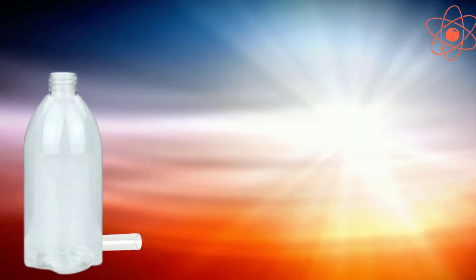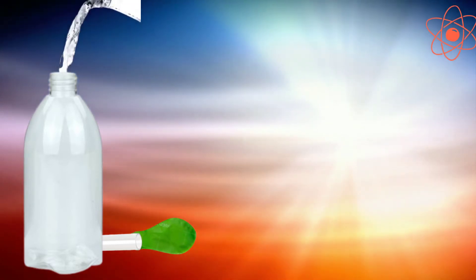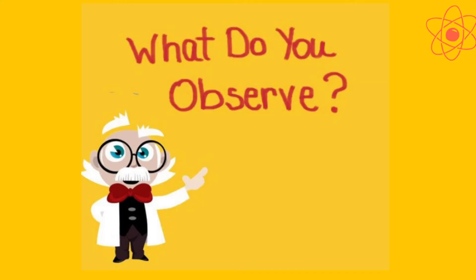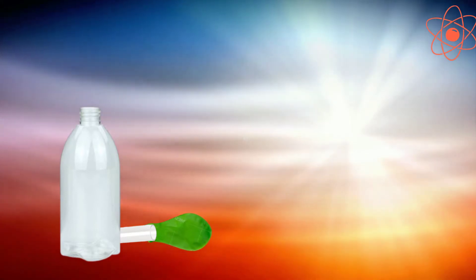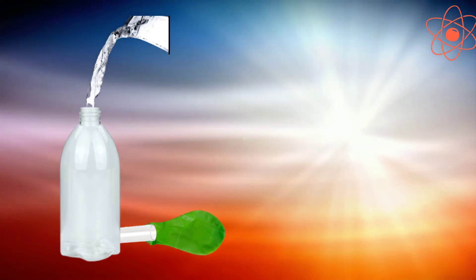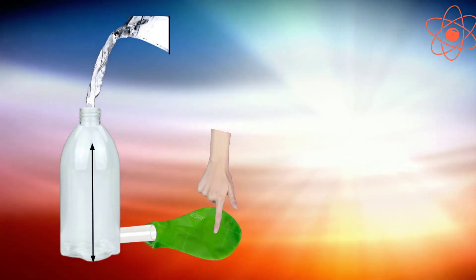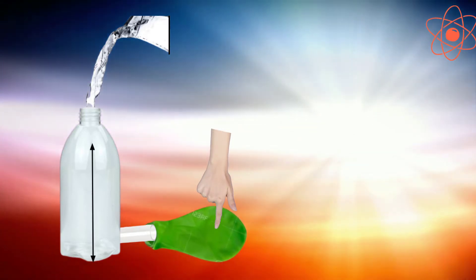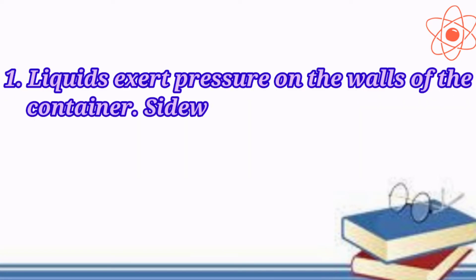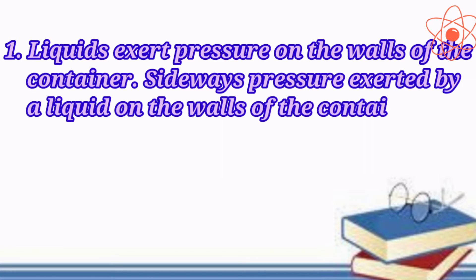Take a bottle with a tap-like opening at each side. Tie a balloon to the opening and fill the bottle with water. You will notice that the balloon bulges outwards. Now pour more water into the bottle so that the height of the water column increases, and the size of the bulge increases. This shows that liquids exert pressure on the walls of the container. This sideways pressure exerted by a liquid on the walls of the container is called lateral pressure.